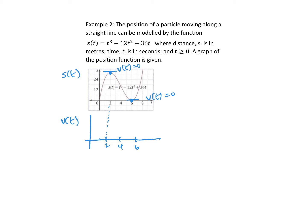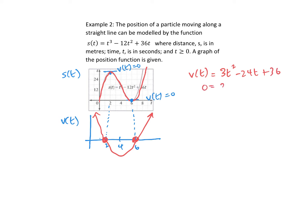What does the slope look like before 2? It has a positive slope, then a negative slope, then a positive slope again. We could also find the velocity equation by taking the derivative of s(t) to confirm. Setting the velocity equal to zero and factoring out the 3, then factoring the quadratic, we confirm that t = 2 and t = 6 are indeed where the velocity is zero.